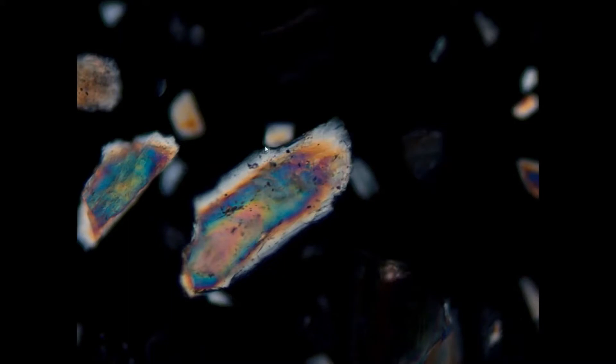On the rim where it's thinner, we see first-order colors and in the center, where it's a little bit thicker, we can see second-order interference colors.